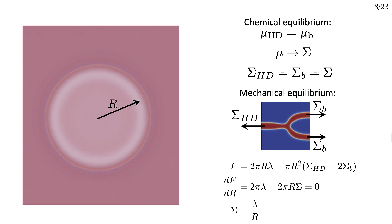Now let's consider a hemifusion diaphragm that's in equilibrium. First consider that it's in chemical equilibrium. The chemical potential of the lipids is the same everywhere. If it wasn't, then the lipids would move.